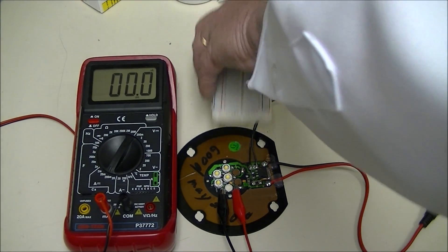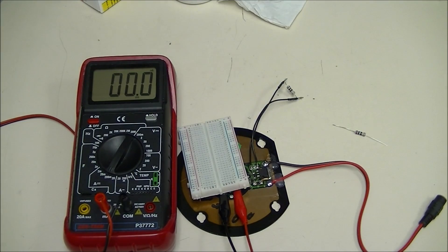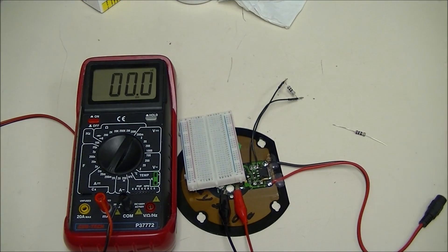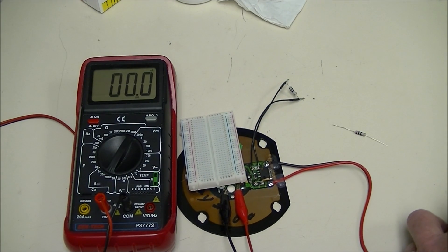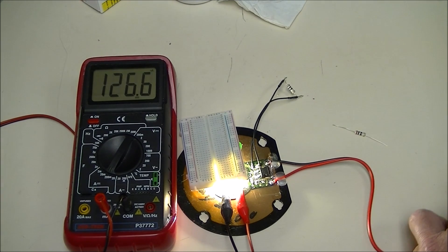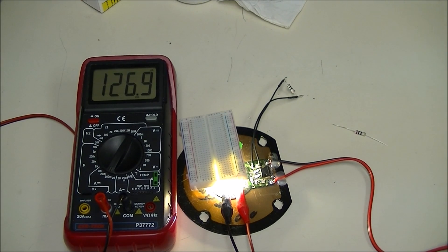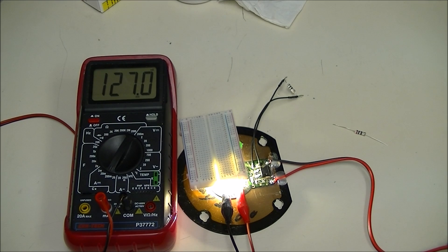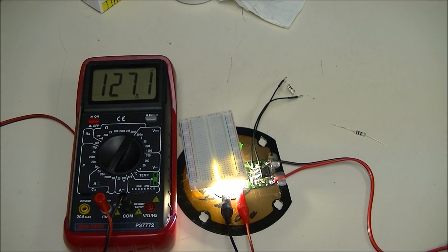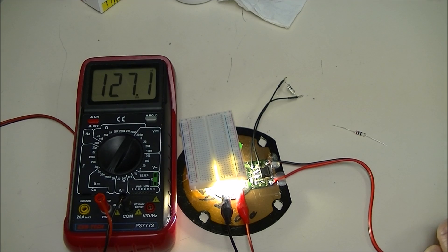The way this works, if you divide 1.25 by 10 ohms, you should get 125 milliamps in the circuit through the LEDs. I'm going to cover them so it won't blind the camera. First of all, we're going to put in 19 volts. Pretty close at 126 or 127 milliamps.